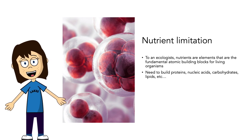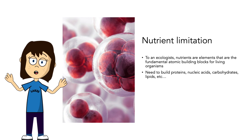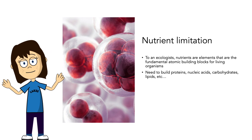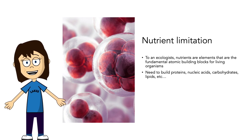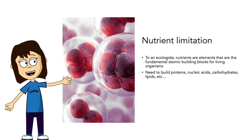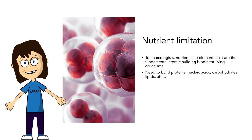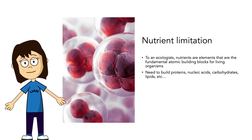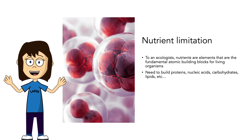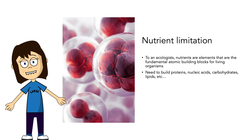Phytoplankton can also be limited by nutrients, and nutrients might be one of the most common limitations on algae growth, especially in the summer when we often have warm, well-lit waters. To ecologists, nutrients are elements that are fundamental atomic building blocks for living organisms. The two nutrients we talk about most are nitrogen and phosphorus. Phosphorus is common on Earth but rare in aquatic ecosystems — most is tied up in rocks — yet it's essential for DNA (which has a phosphate backbone), and also important in photosynthesis, respiration, energy storage and transfer, cell division, and cell enlargement. Nitrogen is a major component of chlorophyll — the most important pigment needed for photosynthesis — as well as amino acids, the key building blocks of proteins.